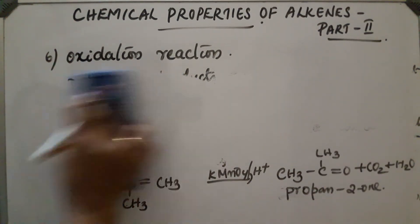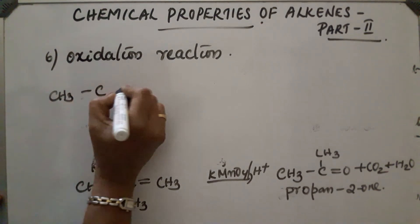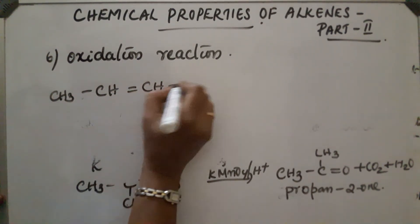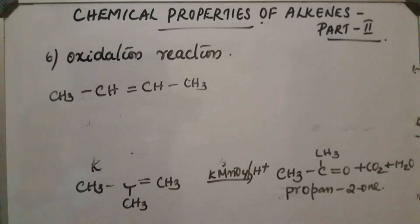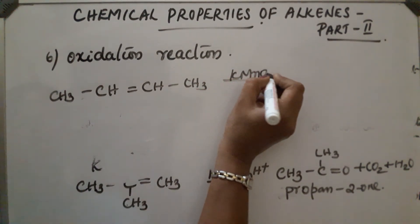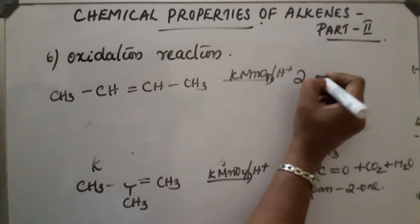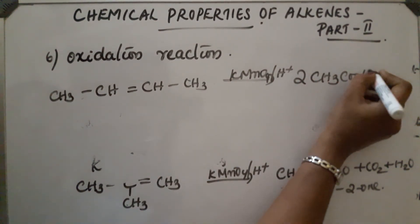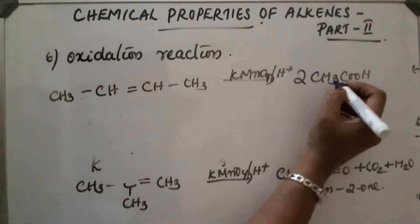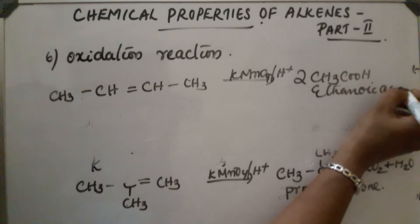Take another compound: CH₃–CH=CH–CH₃, which is but-2-ene. If this reaction takes place in the presence of acidic KMnO₄, acidic potassium permanganate solution, the product obtained is 2 CH₃COOH — ethanoic acid is obtained. Degradation takes place and ethanoic acid is the product.